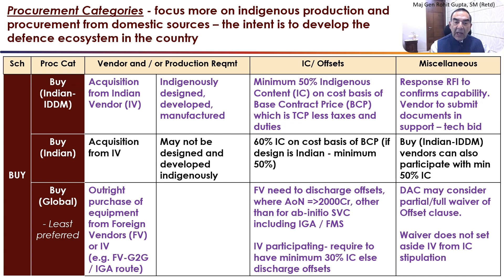BUY Global is the least preferred of all the categories. It implies outright purchase of equipment from a foreign vendor, or it could also be an Indian vendor. Examples include the government-to-government route, the IGA route — inter-government agreement — such as the Russian route or the FMS foreign military sales agreement with the USA. The foreign vendor needs to discharge offsets if the estimated cost of the project is equal to or greater than 2,000 crores at the time of AON. However, this is not applicable for single vendor cases including the IGA and FMS routes. The DAC can consider partial or full waiver of the offset clause. An Indian vendor participating in this category requires a minimum 30 percent indigenous content; if not, offsets must be discharged. The waiver does not set aside the indigenous content stipulation for Indian vendors.